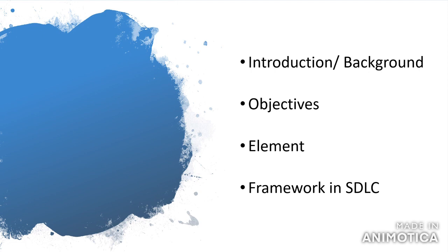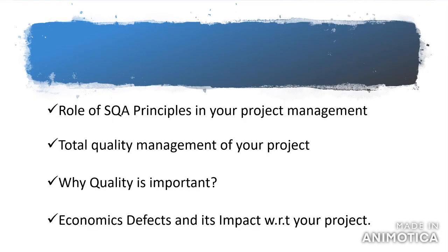Whether the software development lifecycle is well-worked or not, and whether these points are related to that particular project — this means quality is maintained. The role of SQA principles in your project: which principle applies at which stage and whether those principles are completely fulfilled. Total quality management of your project — that the combined quality of each step is maintained throughout the total project.